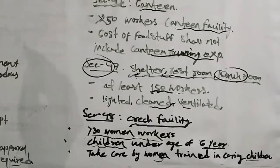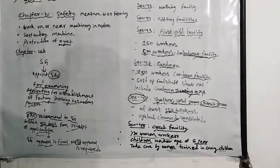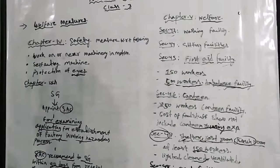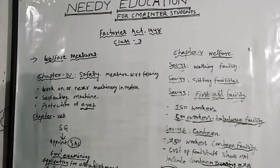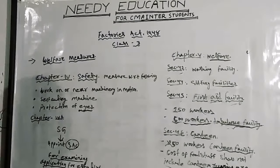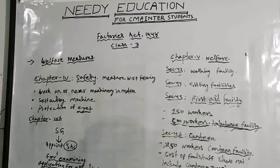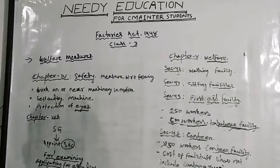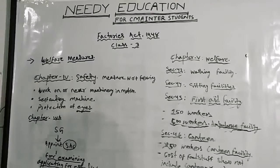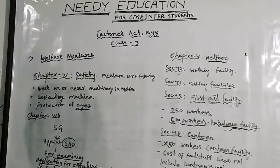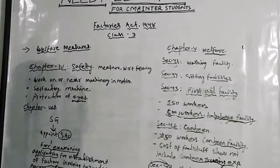So students, this is regarding the welfare measures which have been described in this chapter. I think you have a better understanding regarding the Factories Act which we have read. If any doubt, then comment. Till then, thank you.